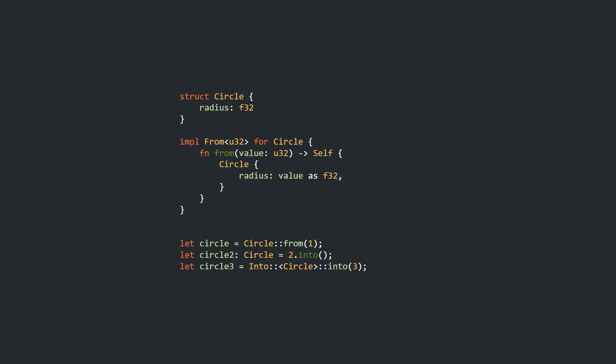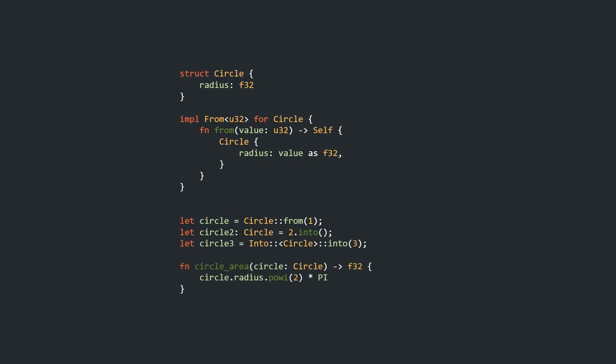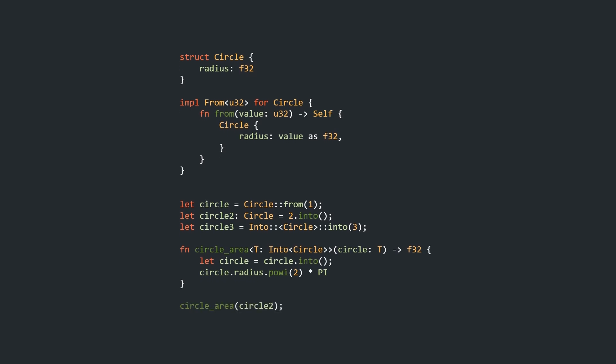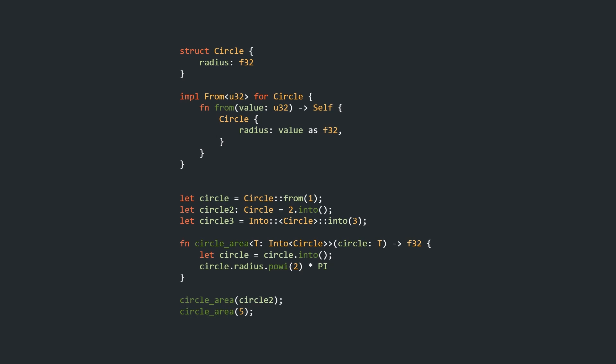Let me show you how to create very ergonomic function APIs with the Into trait. Assume we have a function that takes ownership of a Circle and returns its area. We can define a generic type T with a trait bound of Into<Circle>. Instead of accepting a Circle directly, we can now accept any T that implements Into<Circle>. With only a single line of extra code, we convert whatever type we got to an actual Circle and then compute the area. This allows us to call the circle area function with an actual Circle, but also with a U32, making our functions more user-friendly and the calling code a lot less verbose.